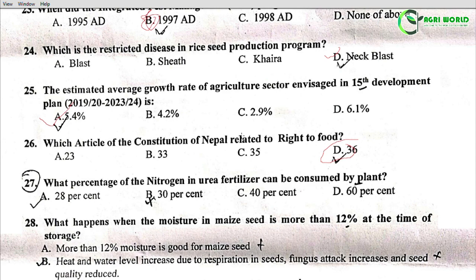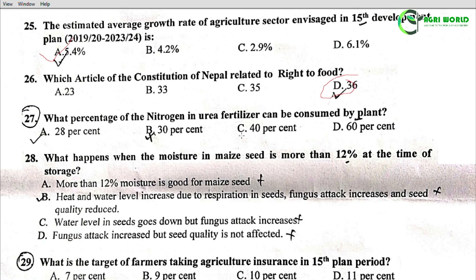Question 27: What percentage of nitrogen in urea can be consumed by plants? Options: 28%, 30%, 40%, 60%. The correct answer is 28% of nitrogen in urea fertilizer can be consumed by plants.